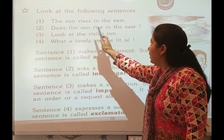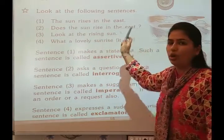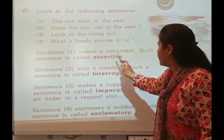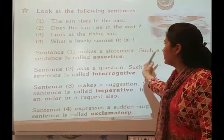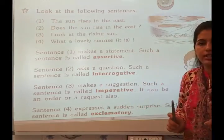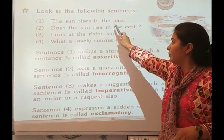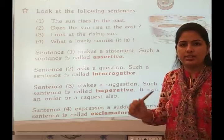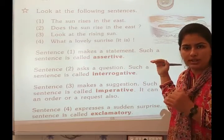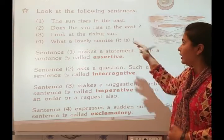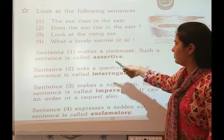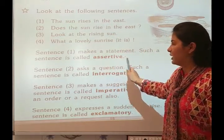Number one: The sun rises in the east. Sentence one makes a statement. Such a sentence is called assertive. It is just a positive statement — there is no use of 'not'. This is called the assertive sentence.